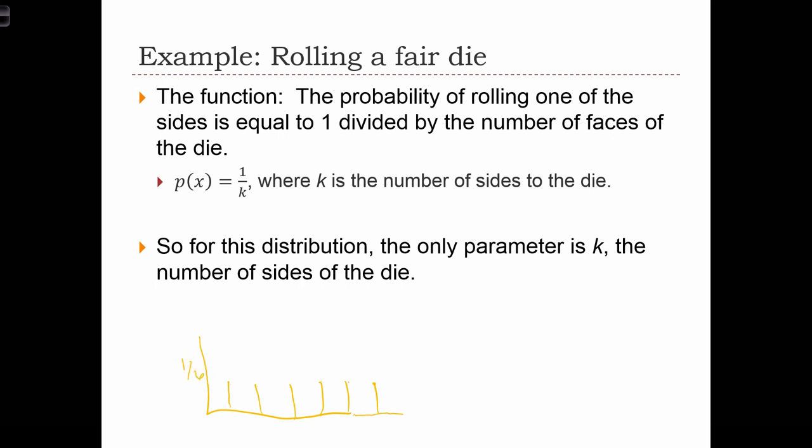If we wanted to do this for flipping a coin, we would have the same thing, only there would only be two outcomes, zero and one, or heads and tails. And each of the probabilities would be a half.